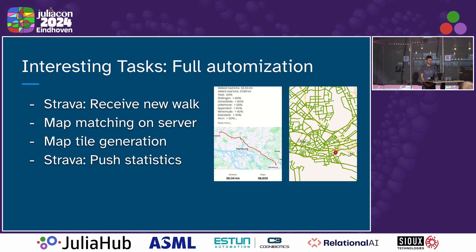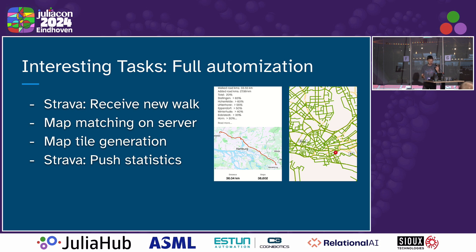Another interesting part was full pipeline automation. I connect to the Strava API, so when I receive a new walk, I run map matching on a small server, do tile generation, and push statistics back. What you can see here is my walk progress — I've finished 20% of my city after one year. There's a statistics breakdown by district, and on the far right a stripped-down version of the map where in green you can see what I've already walked.